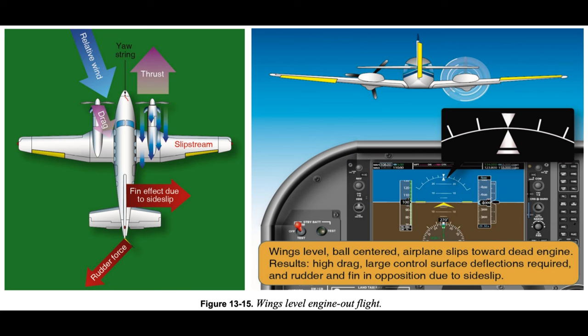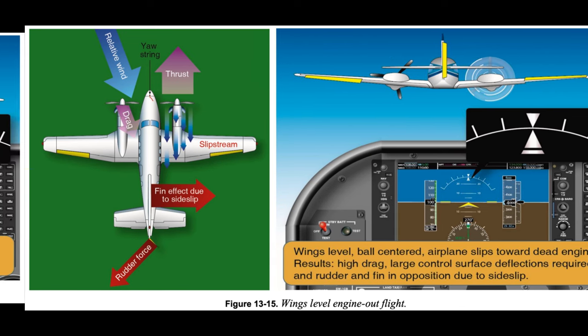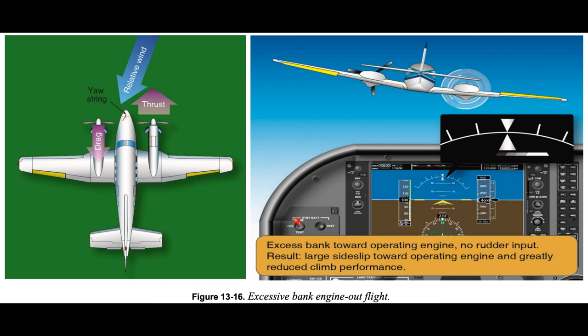Scenario one: engine-inoperative flight with wings level and ball-centered requires large rudder input toward the operative engine. The result is a moderate sideslip toward the inoperative engine, and climb performance is reduced by that sideslip. With wings level, VMC is significantly higher than published as there is no horizontal component of lift available to help the rudder combat asymmetrical thrust. Scenario two: engine-inoperative flight using ailerons alone requires an 8–10 degree bank angle toward the operative engine, the ball is displaced well toward the operative engine, and climb performance is greatly reduced by the large sideslip toward the operative engine. Due to the increased risk of loss of control, instructors should not normally demonstrate this.